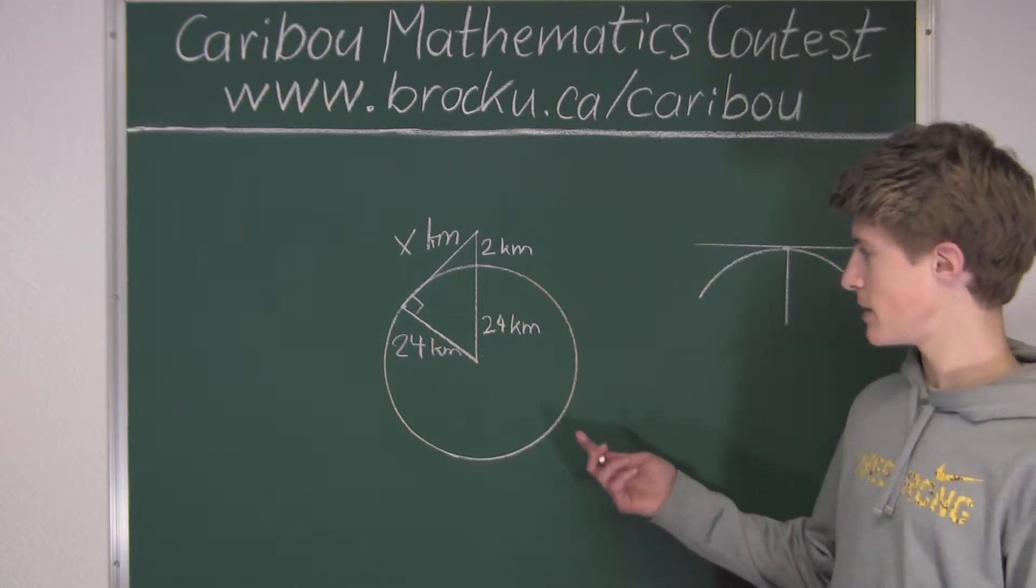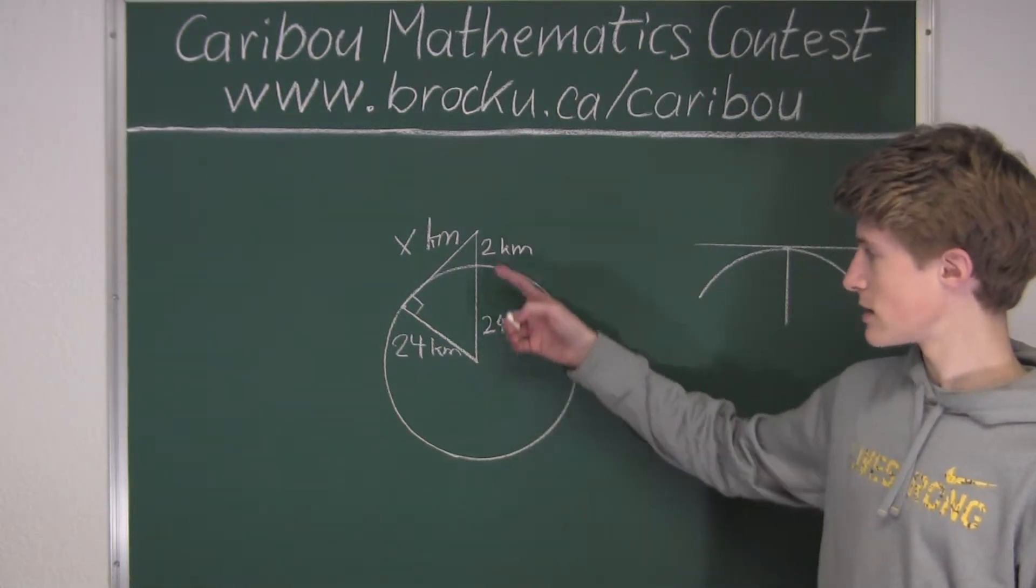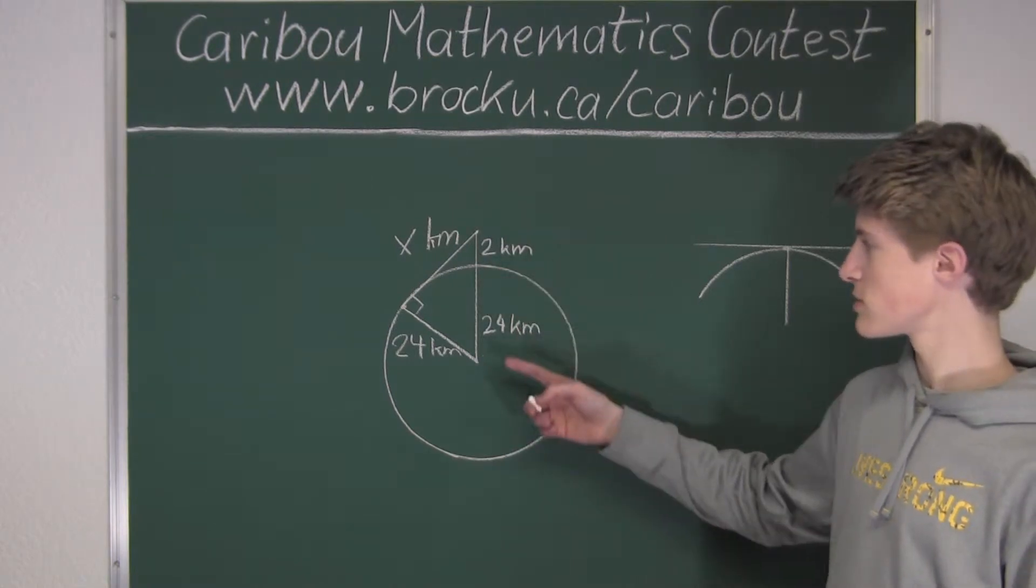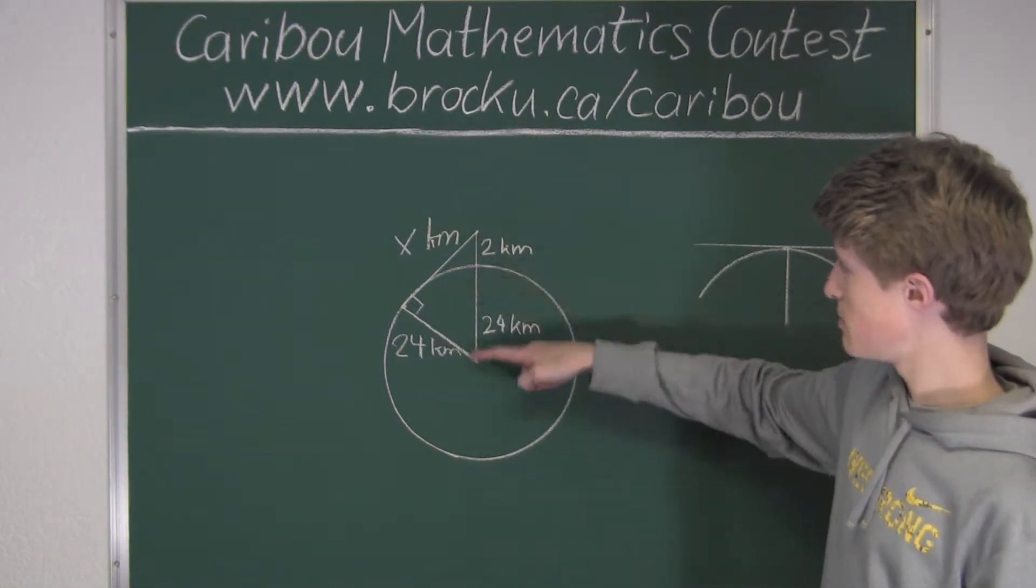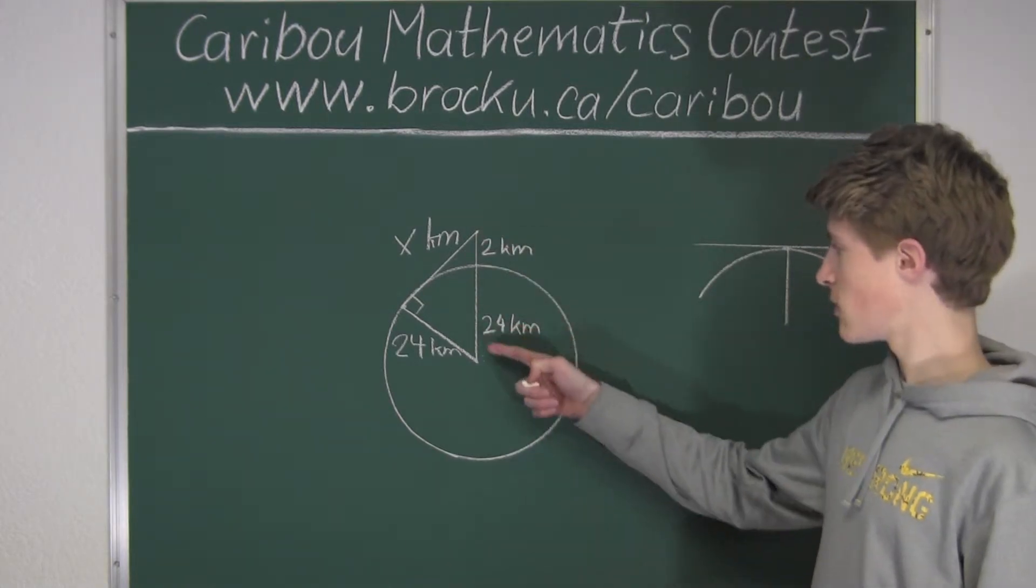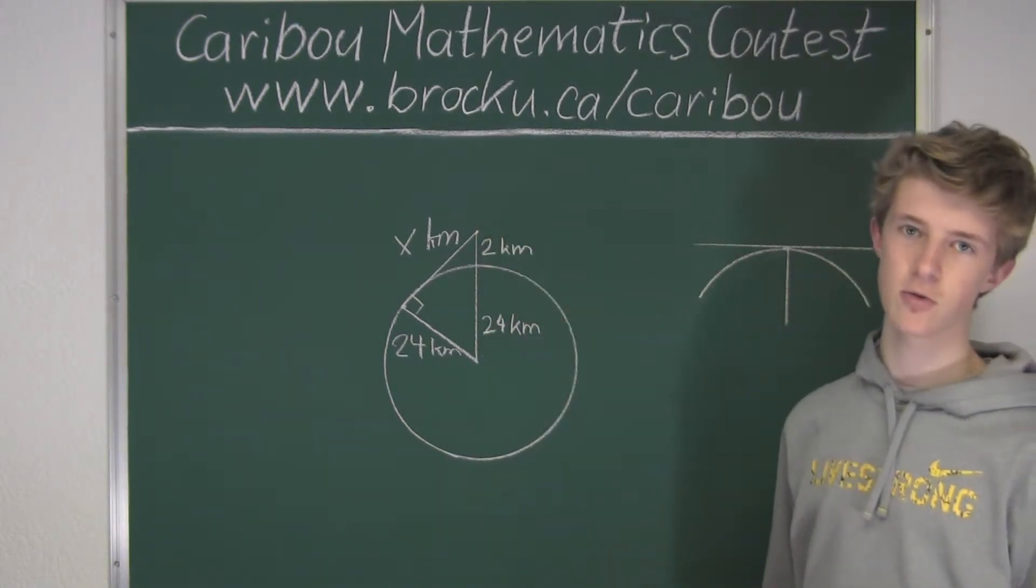Where c squared would be, well, c would be the longest side length, which would also be opposite to the right angle. So therefore, we would know that that would be this side, which we know is 24 plus 2 is 26.